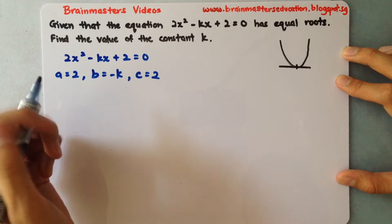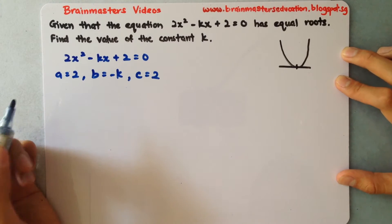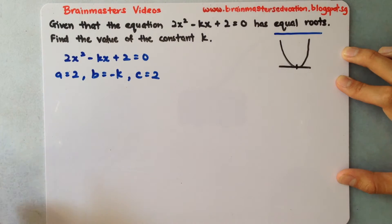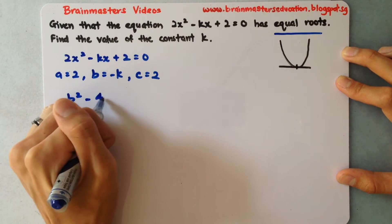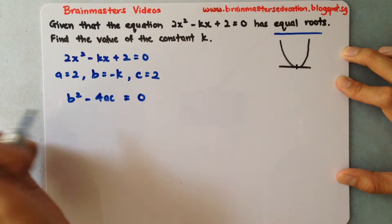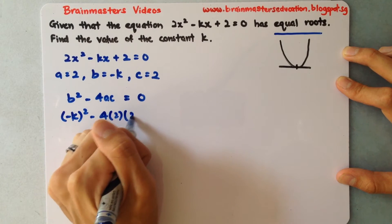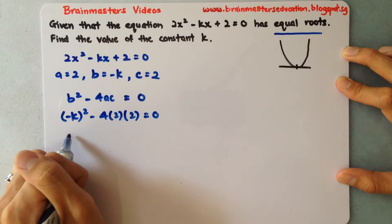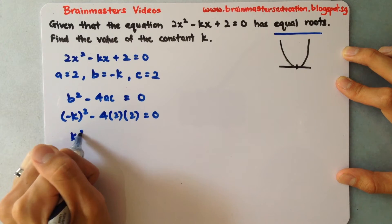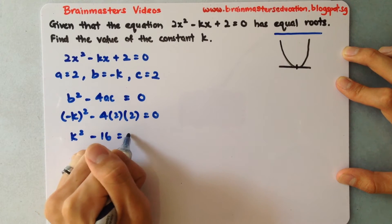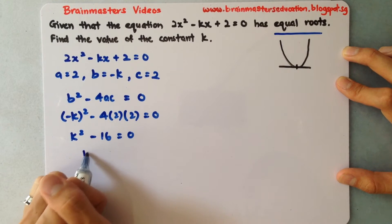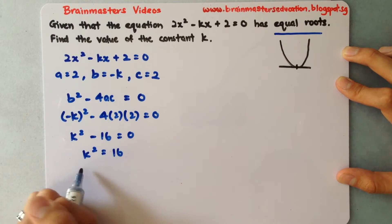We have to substitute this value into our discriminant and set it to equals 0 due to it saying equal roots. So b squared minus 4ac equals 0. What I have is negative k squared minus 4 times 2 times 2 equals 0. By simplifying, I have k squared minus 16 equals 0. I need to solve for k. I'll bring this over, k squared equals 16, and square root both sides will give you k equals plus or minus 4.